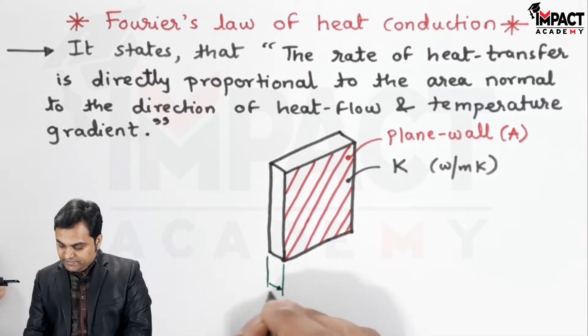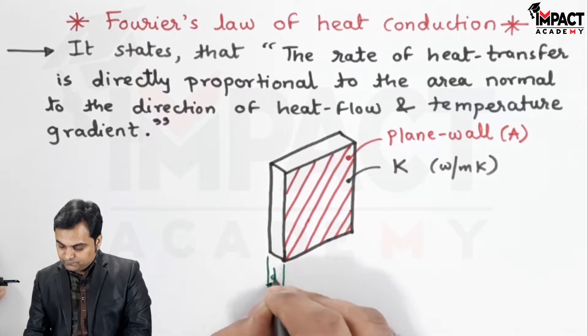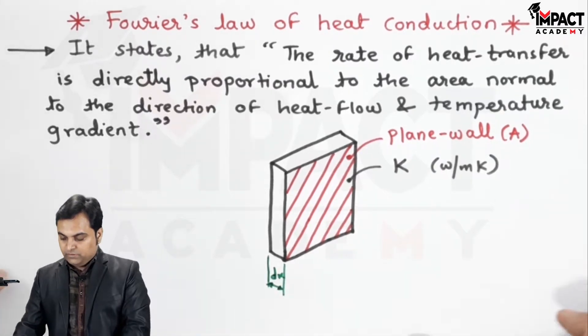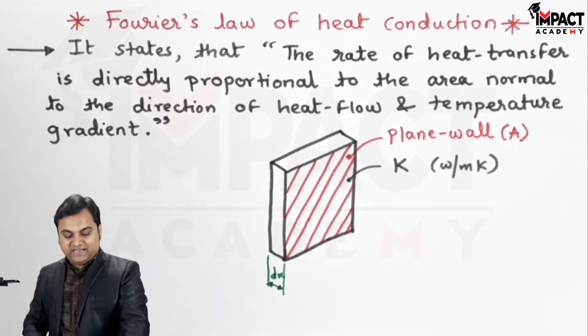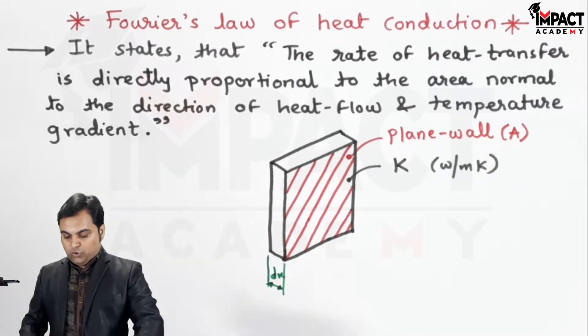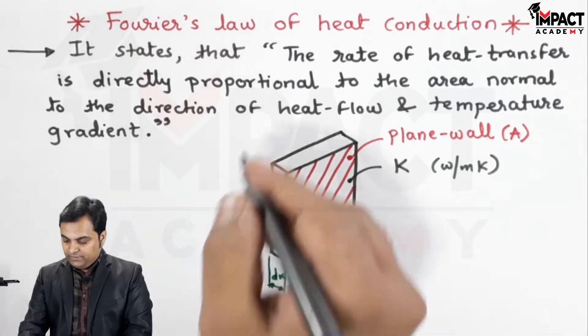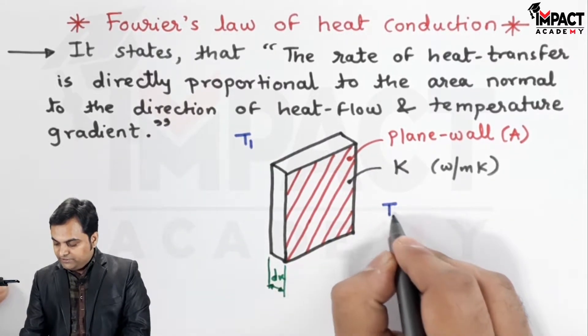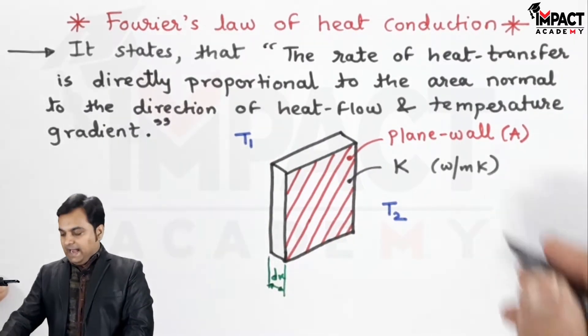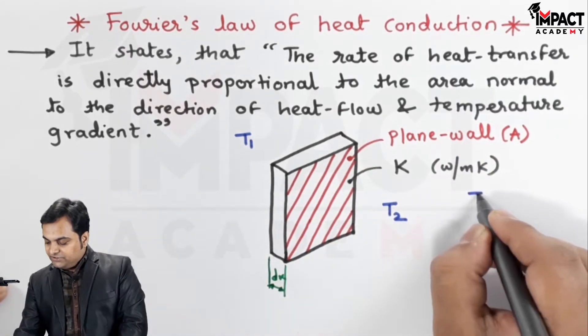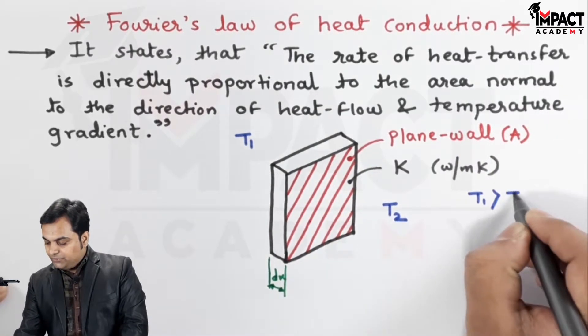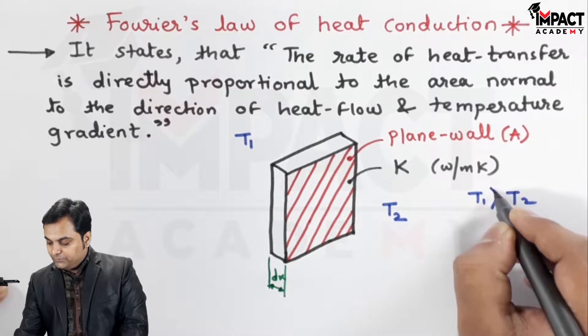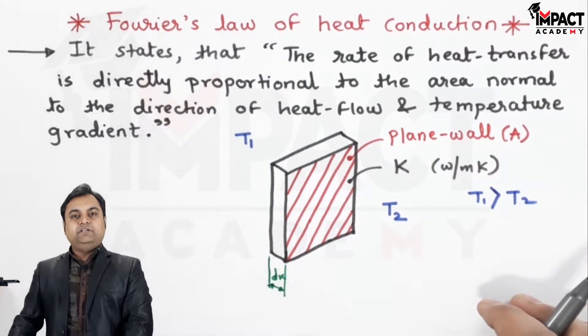The thickness is denoted by DX. Next, there are two sides of the wall. On one side the temperature is T1, and on the other side of the wall the temperature is T2. Here the assumption is T1 is higher than T2, or it is greater than T2. In case of heat transfer, the heat always gets transferred from a region of high temperature to a region of low temperature.